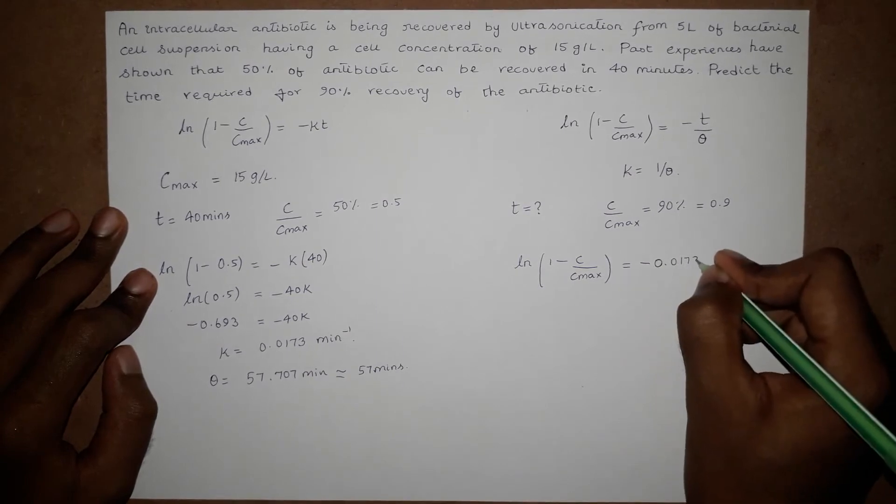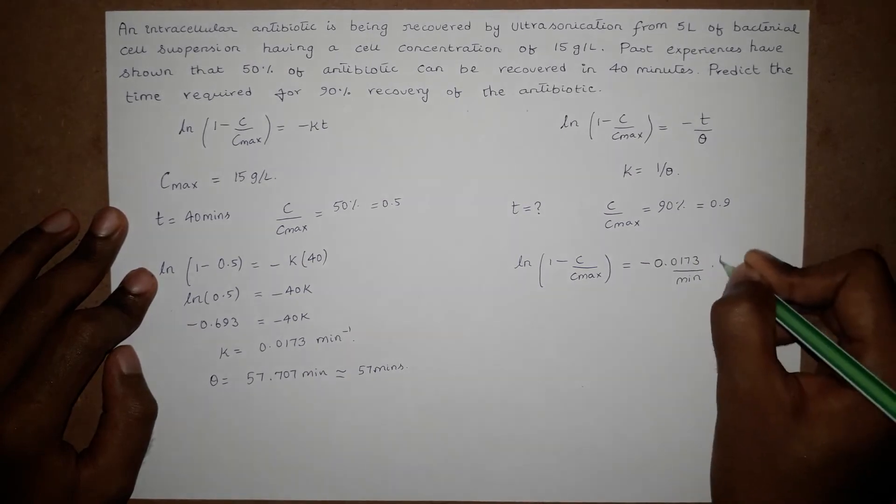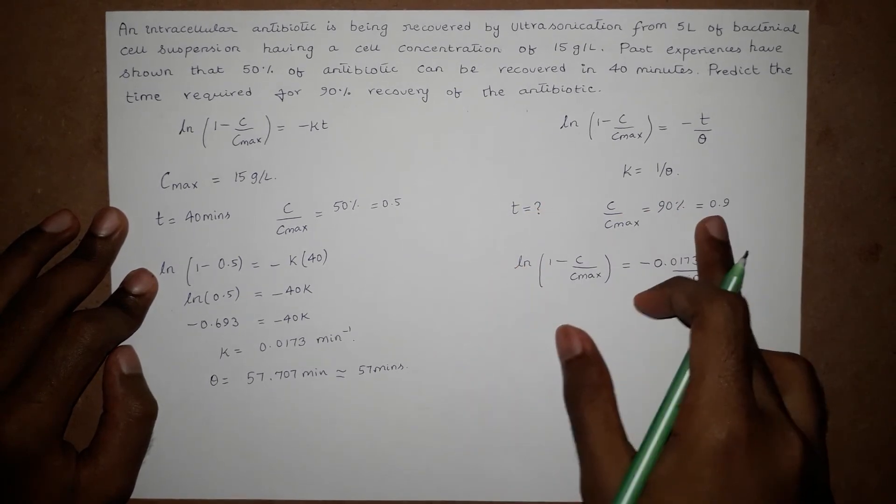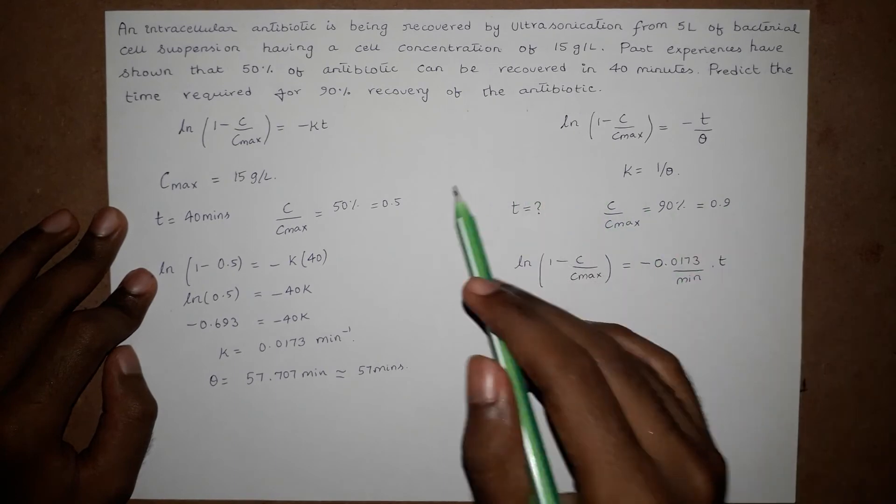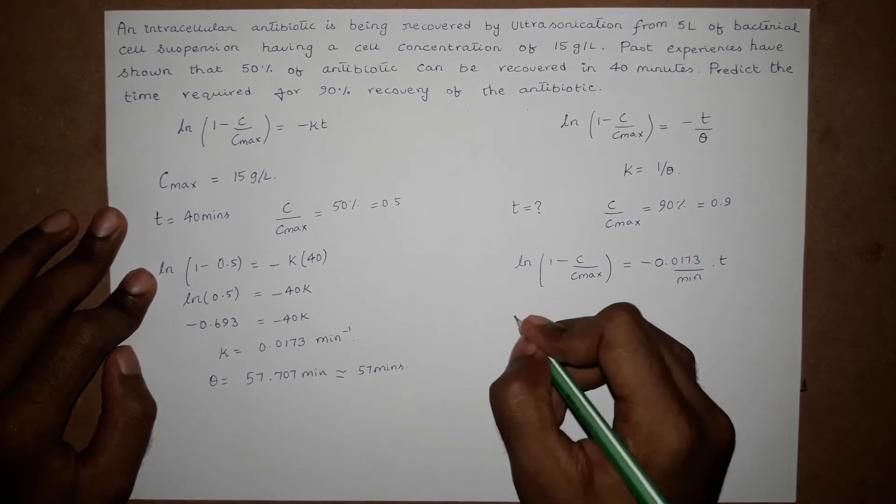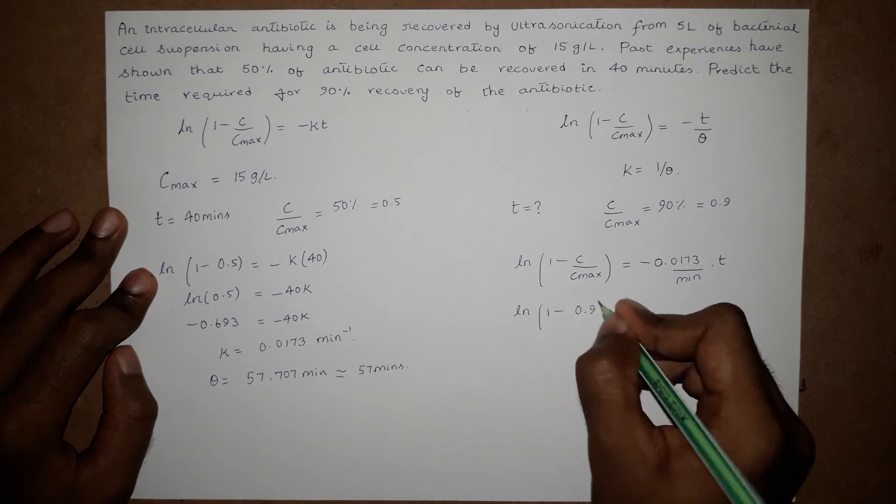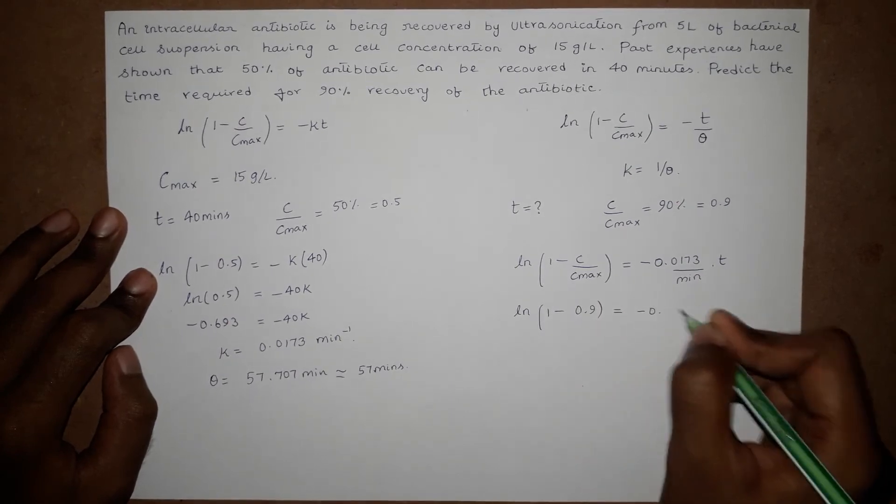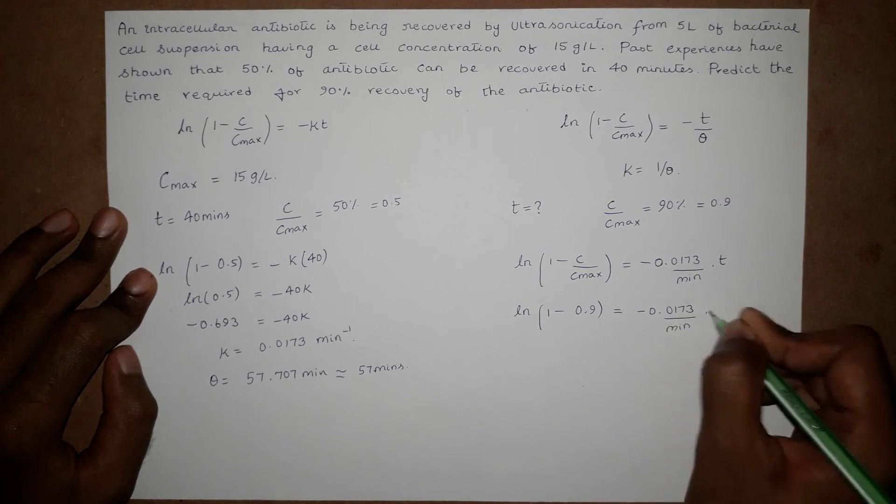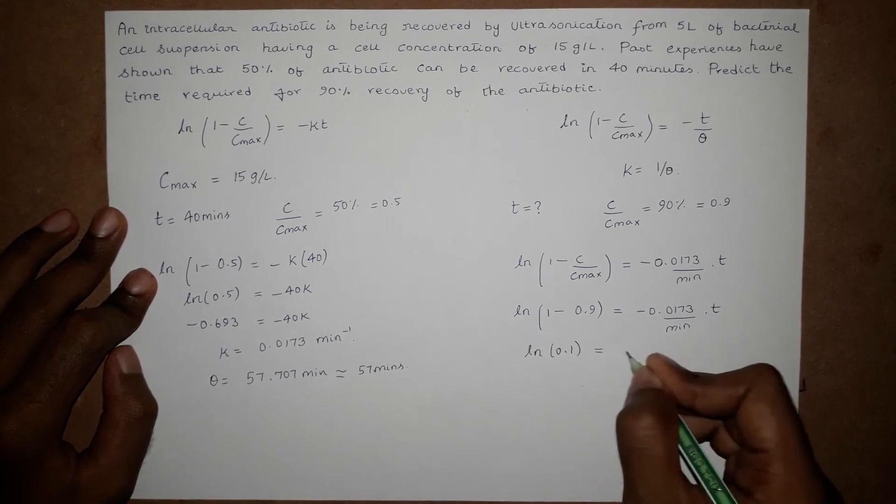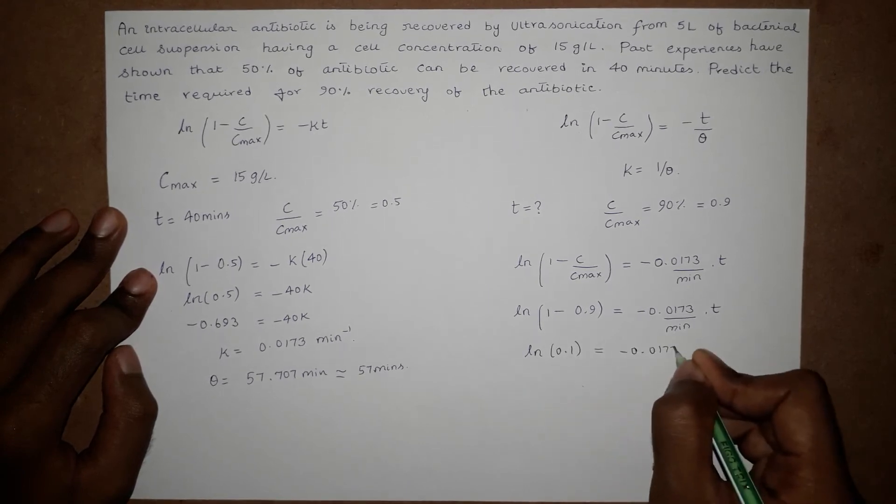This is the general expression. We plug these values and get the time for 90% recovery. Therefore, ln of (1 minus 0.9) equals negative 0.0173 per minute times T. ln of 0.1 equals negative 0.0173 times T.